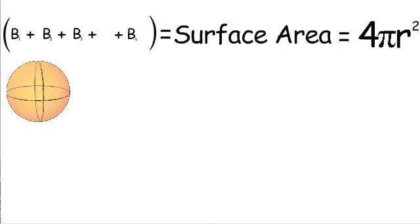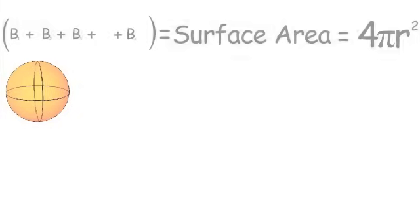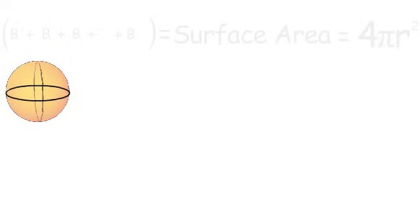Now a quick explanation for why the surface area is 4 pi r squared is first we'll look at our sphere and take its largest possible circumference. With that circumference we'll make a circle.